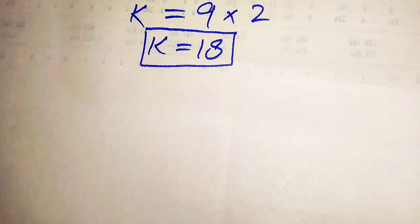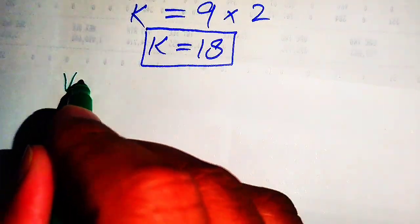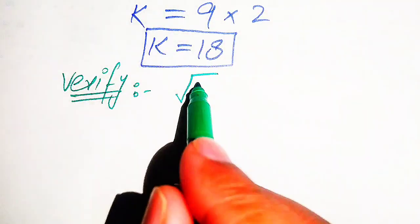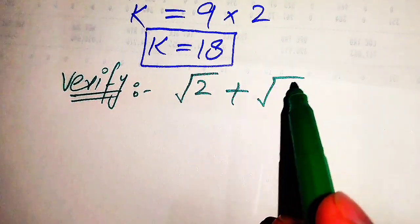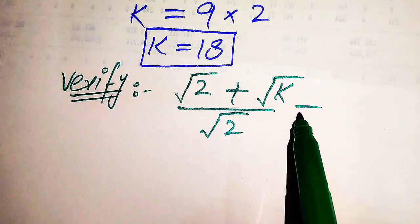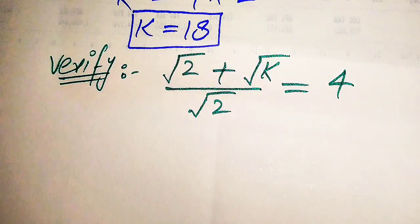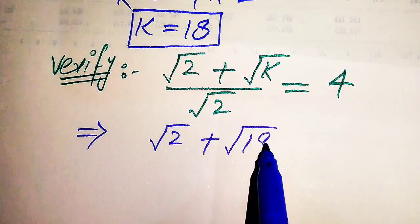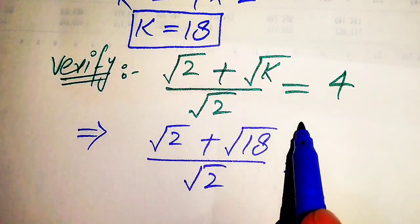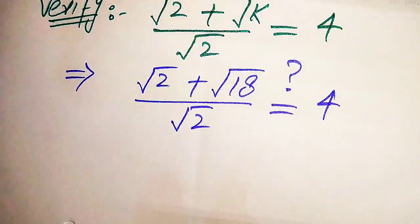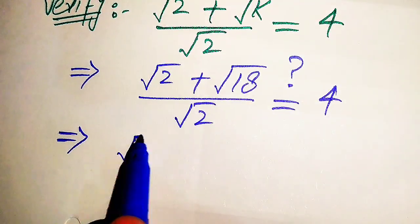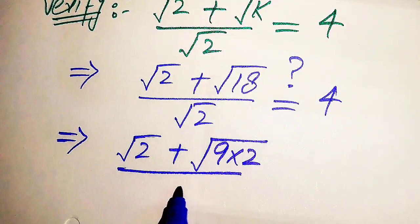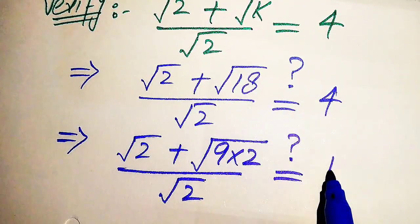In the next step we need to verify whether this value of k is a solution of the given equation or an extraneous root. For verification, we copy down the given equation: square root of 2 plus square root of k, divided by square root of 2, equals 4. We substitute the value of k, so the left hand side becomes square root of 2 plus square root of 18, divided by square root of 2. We need to simplify square root of 18, writing 18 as 9 times 2.